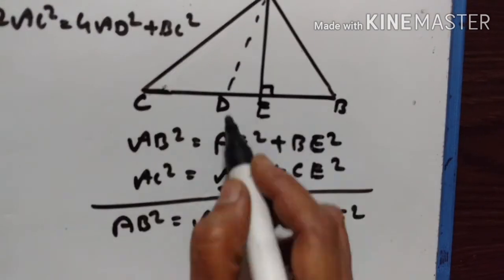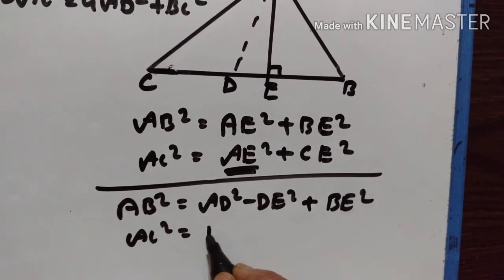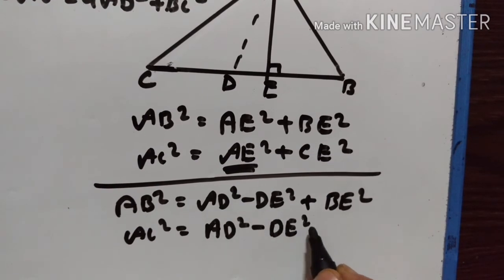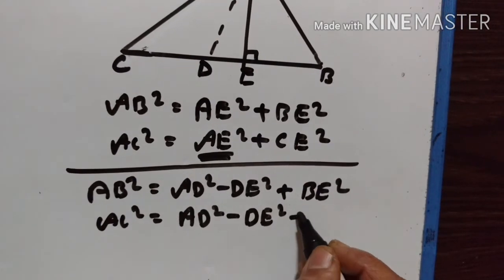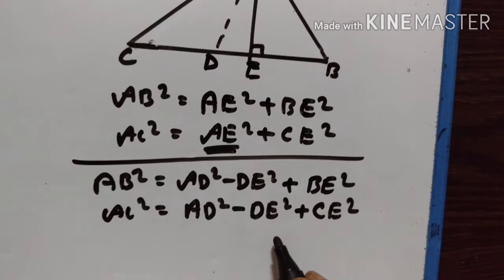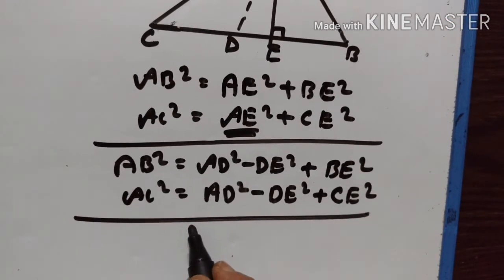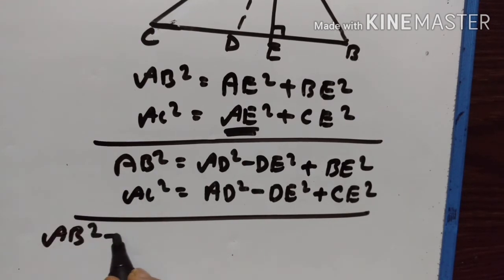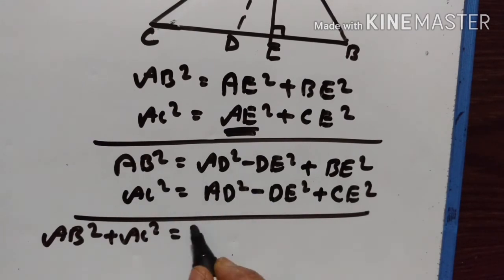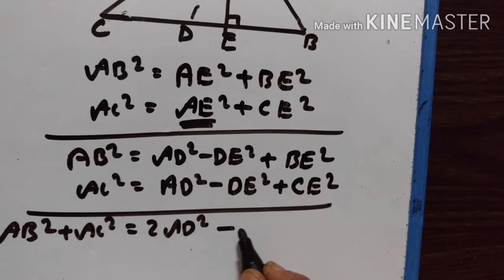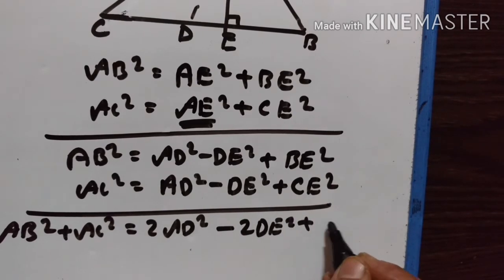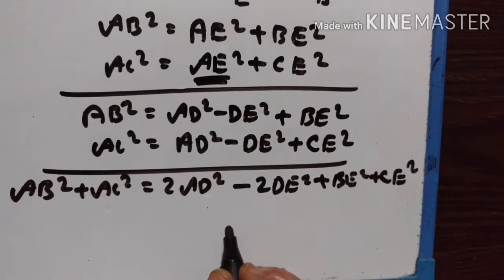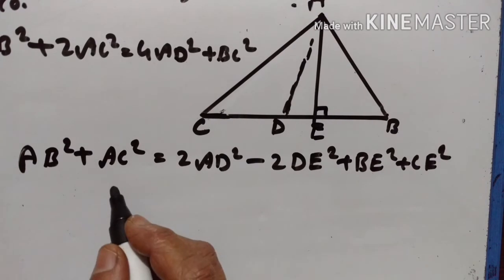So let us substitute AE squared with AD squared minus DE squared. AB squared is equal to AD squared minus DE squared plus BE squared. Similarly, AC squared is equal to AD squared minus DE squared plus CE squared. Adding these, AB squared plus AC squared is equal to 2AD squared minus 2DE squared plus BE squared plus CE squared. Hope you have understood this much.